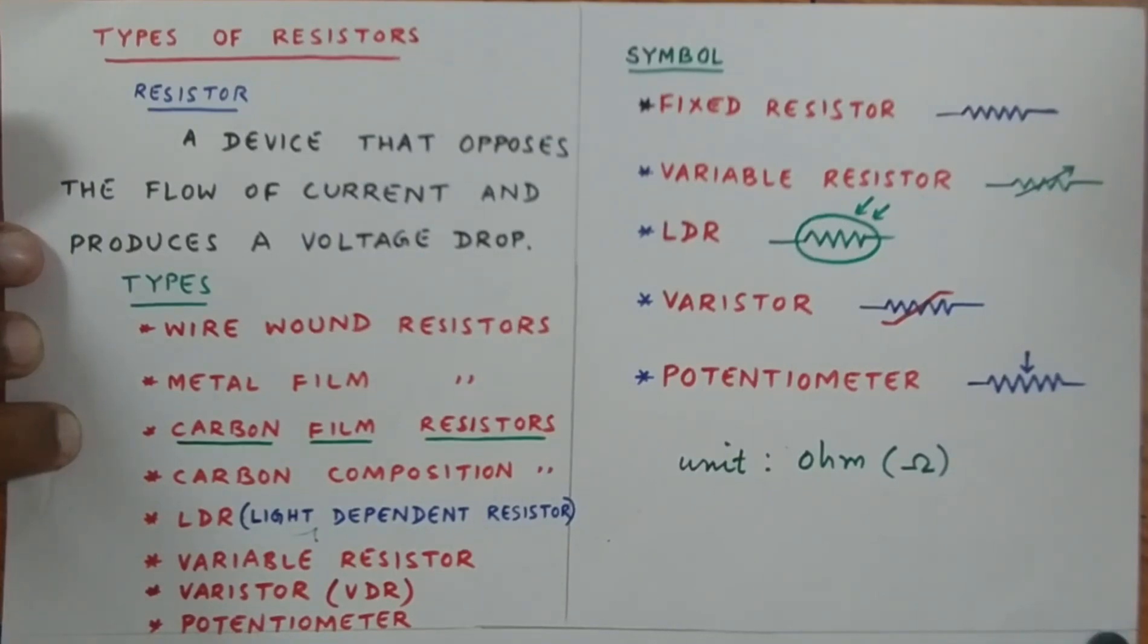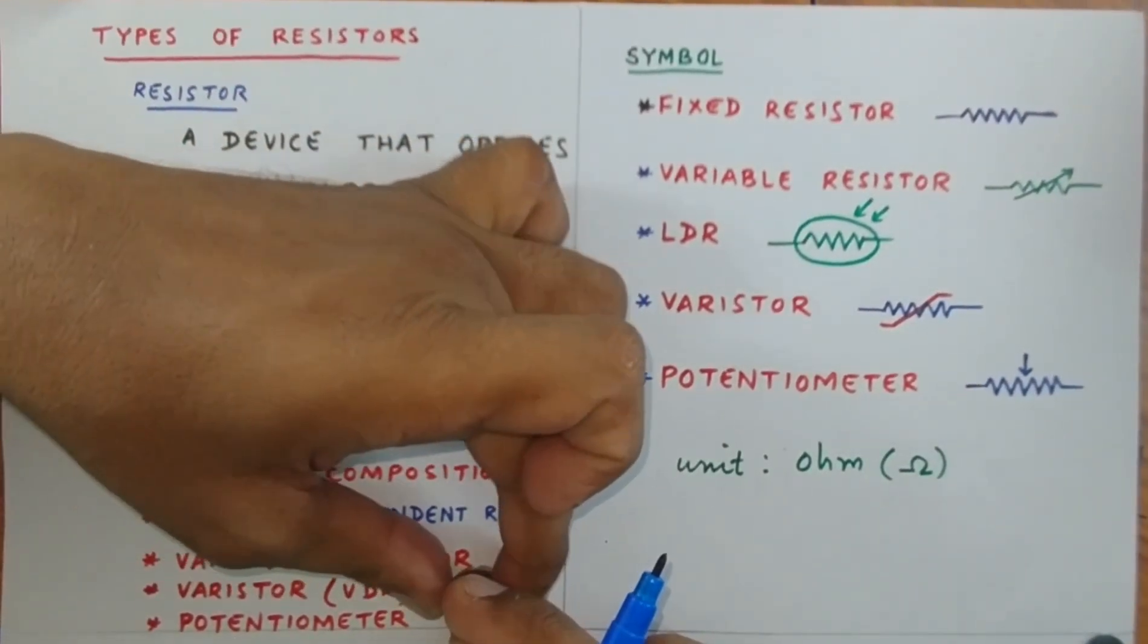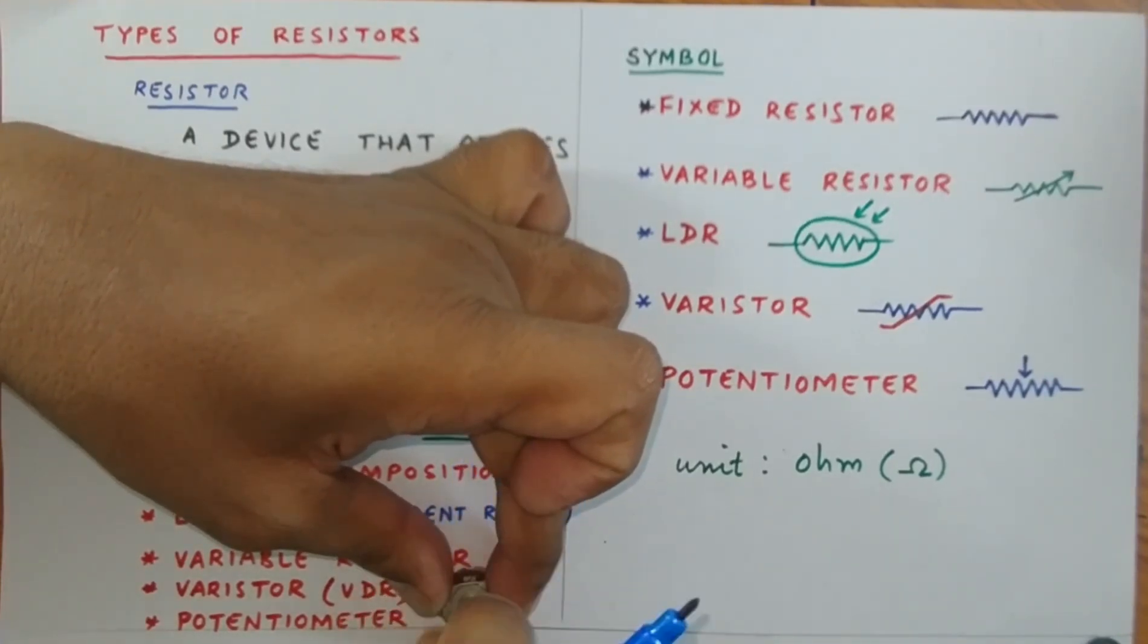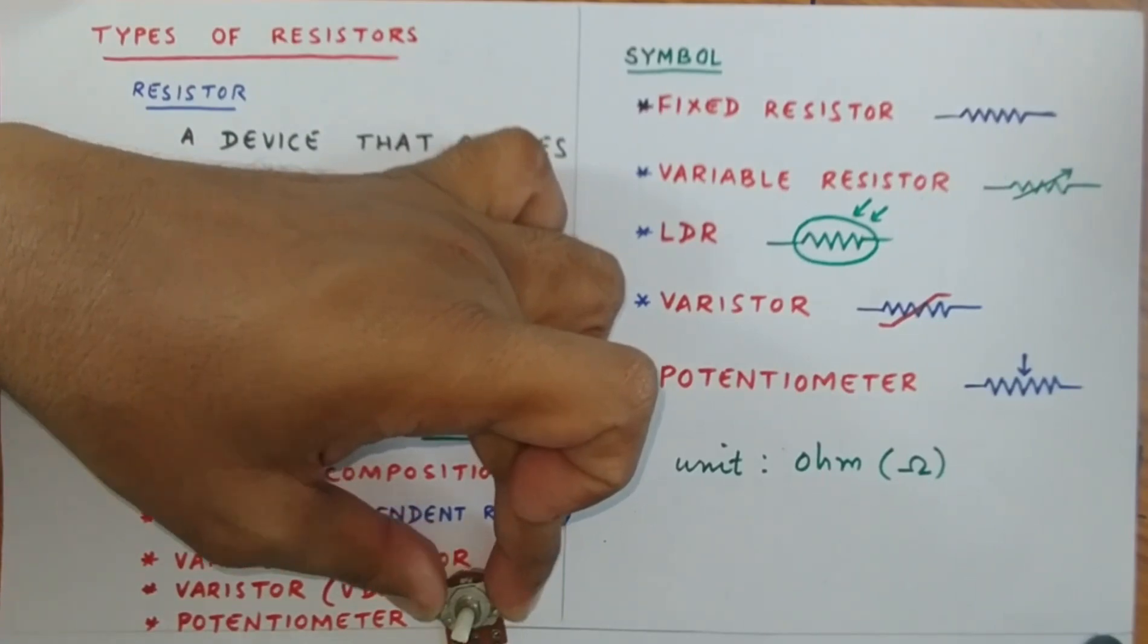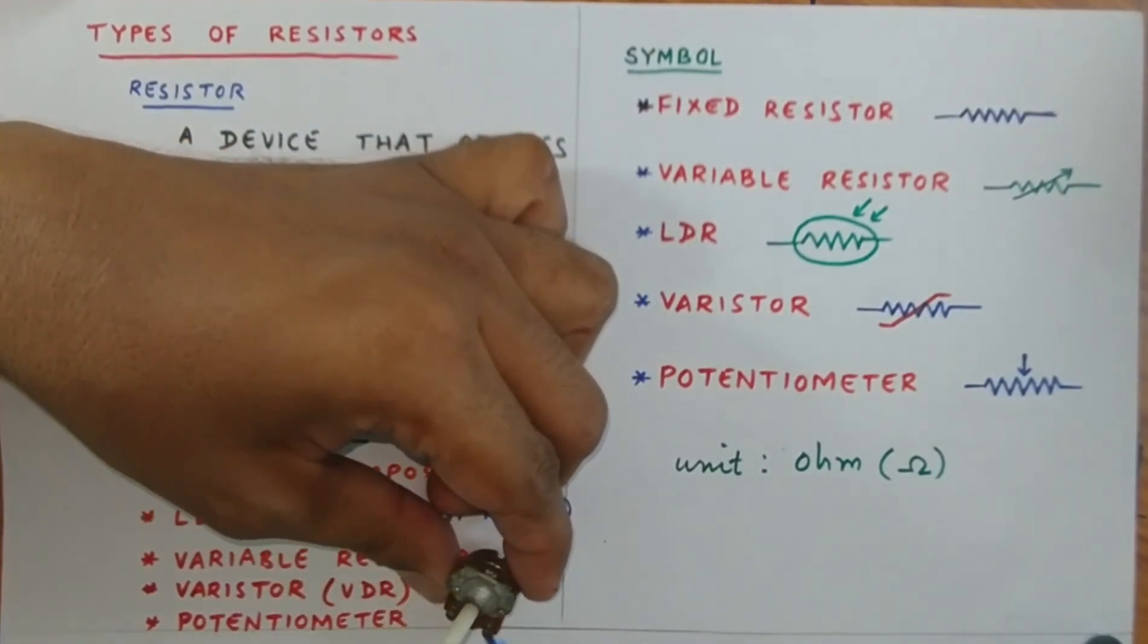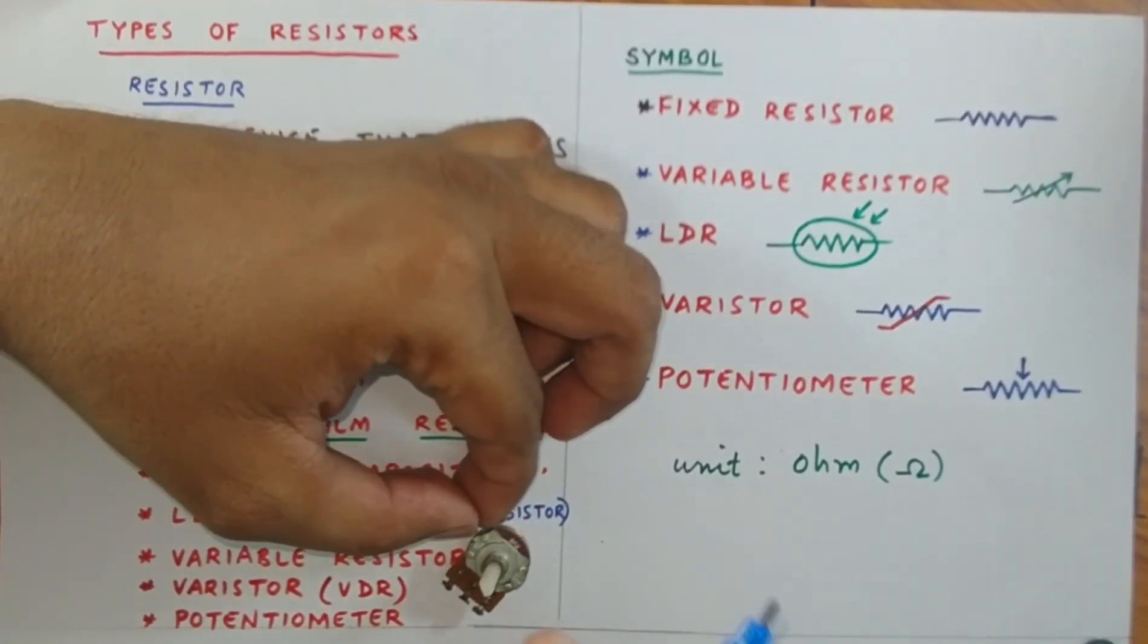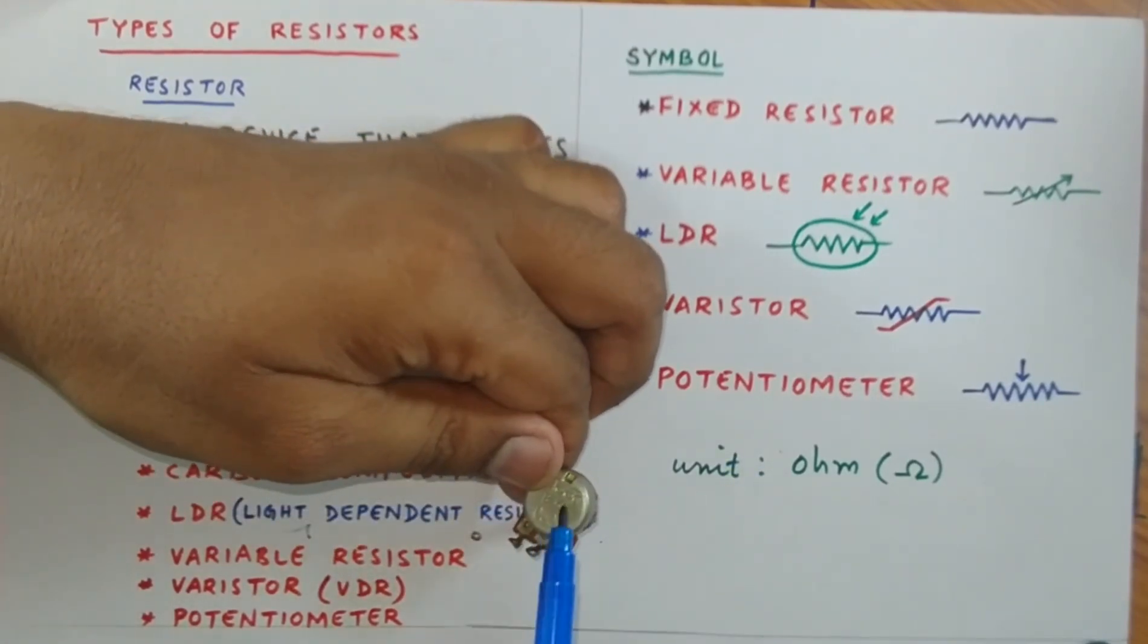Next we have potentiometer. A potentiometer is a kind of variable resistor. Here we have a potentiometer, and it is provided with a notch, or knob. By rotating this, its resistance can be varied. It has three terminals, and its value is mentioned here. This one is a 5k ohm potentiometer.